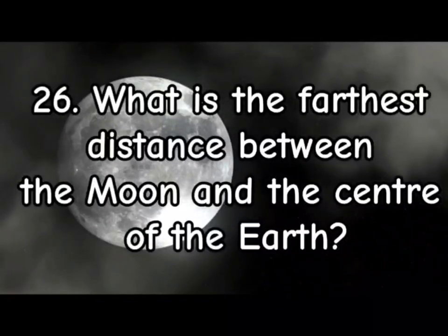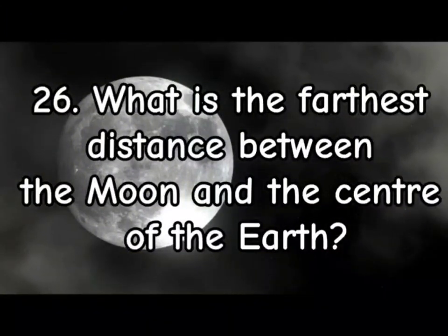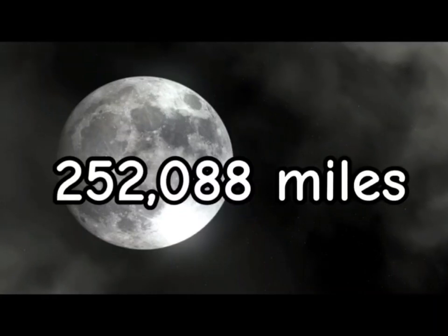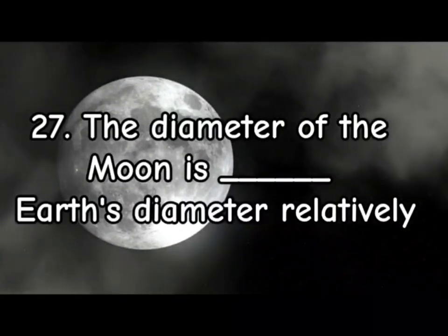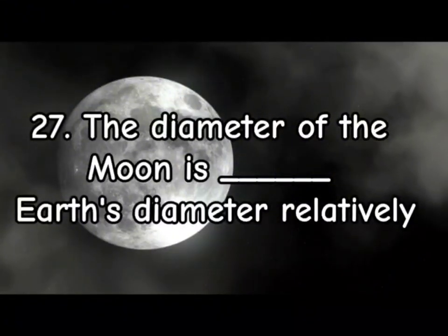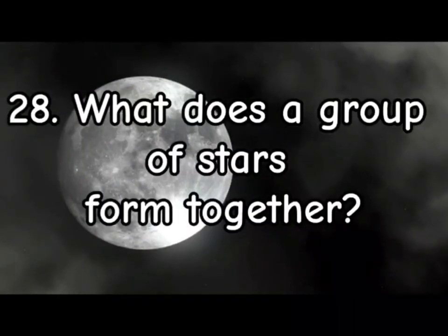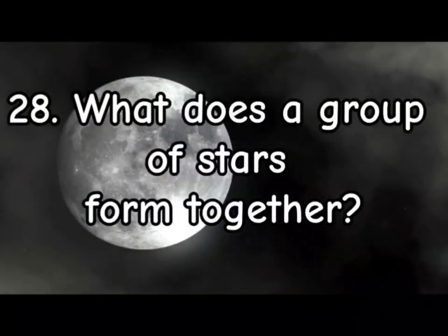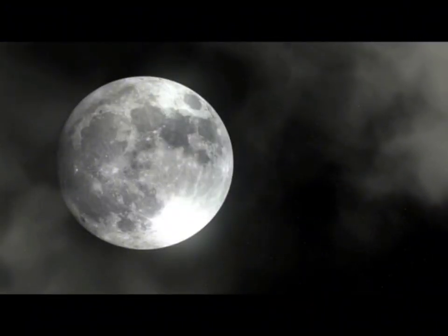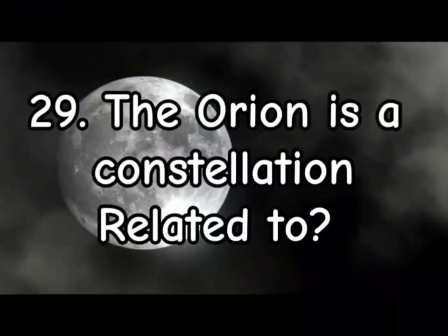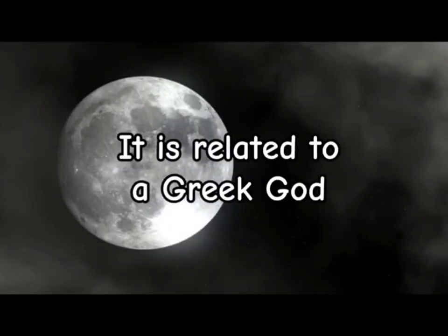26. What is the farthest distance between the Moon and the centre of the Earth? 250,000 to 1,088 miles. 27. The diameter of the Moon is relatively smaller than Earth's diameter. 28. What does a group of stars form together? It forms a constellation. 29. The Orion is a constellation.